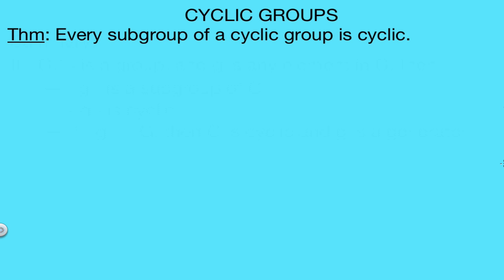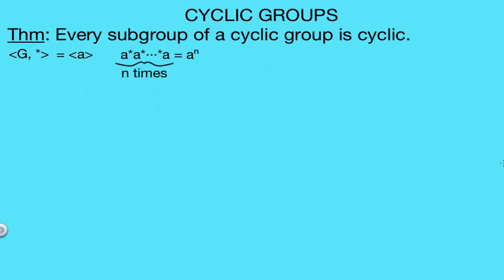Let's go ahead and actually prove this theorem, but before we do that I want to introduce a little bit of notation. So if we have a group G with a binary operation star, and it's a cyclic group with a generator a, meaning that all elements in G can be obtained by repeatedly applying the binary operation star to a, then if we have an element obtained by applying the operation n times, I'm going to use the notation a to the n.